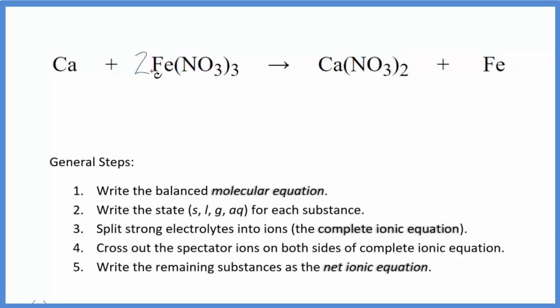I'll put a two. Now I have two times the three nitrates. That's six. I'm going to put a three here. Two times the one, that's two. Two times three is six. The nitrates are balanced. I see I have two irons, put a two here, three calciums, put a three here. That's the balanced molecular equation.